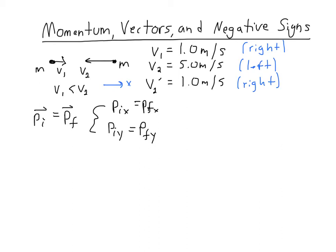Now I have zero initial y momentum. That's because these velocity vectors are all in the x direction. So I can state immediately that the initial is zero, the final is zero in the y direction. So in the y direction, I'm going to have a zero momentum at the beginning and at the end.